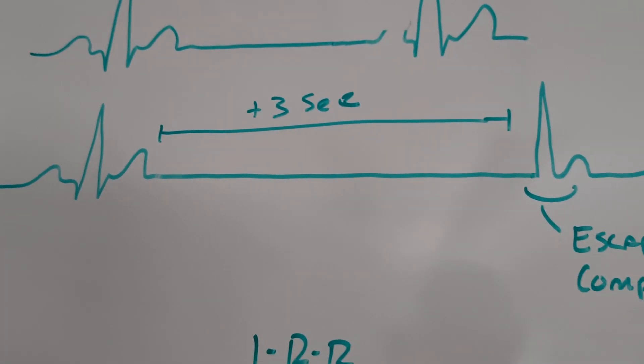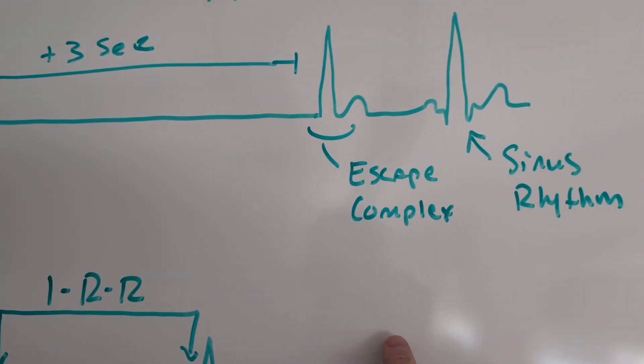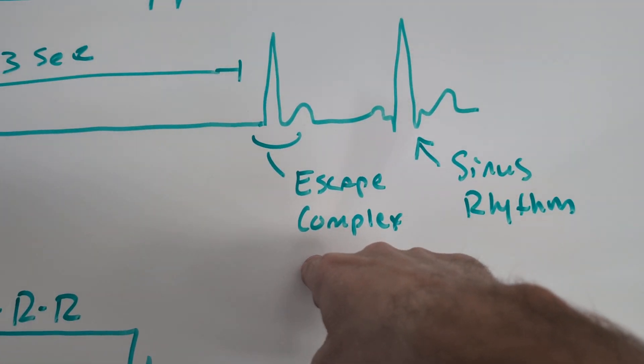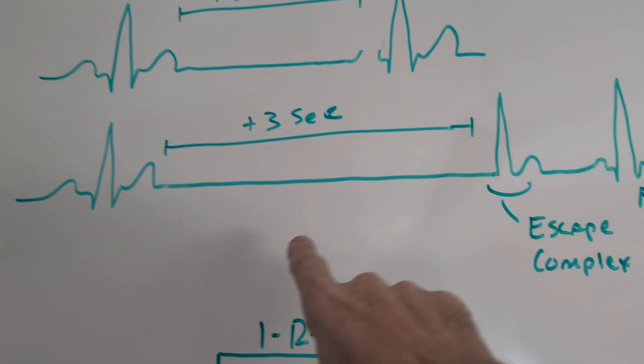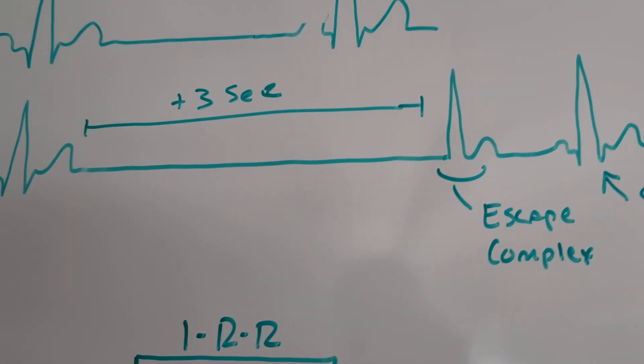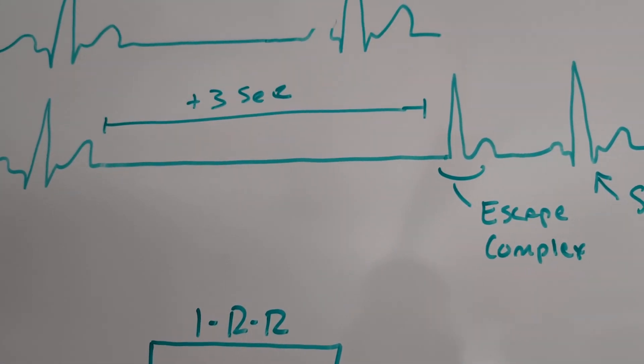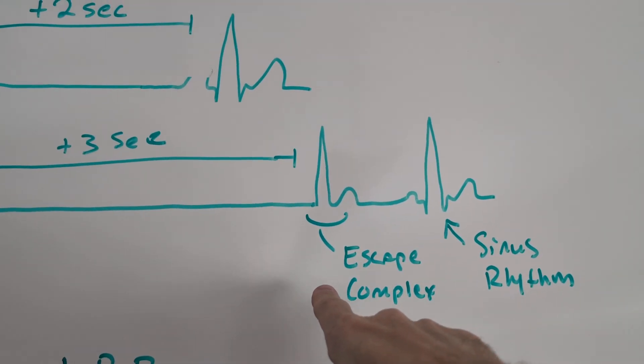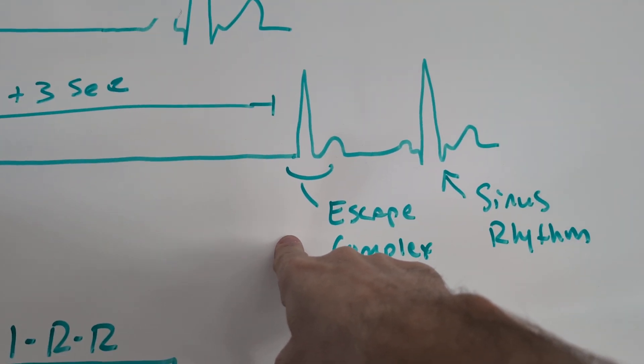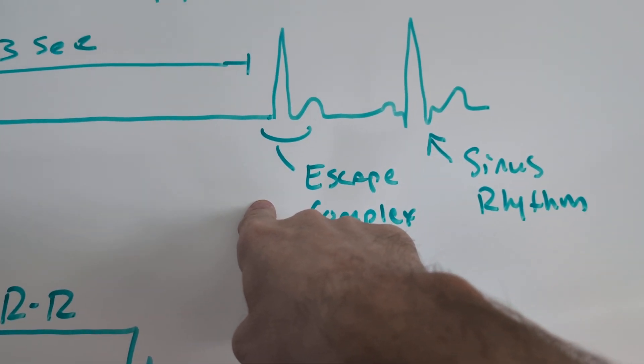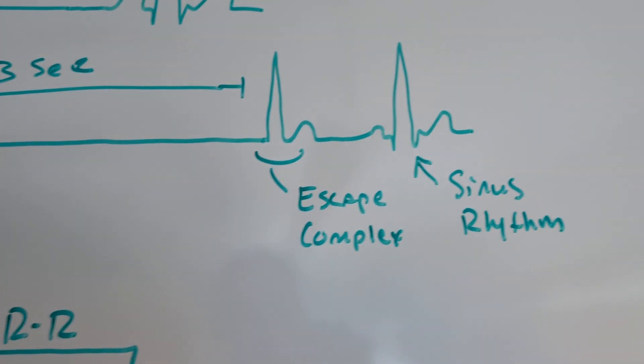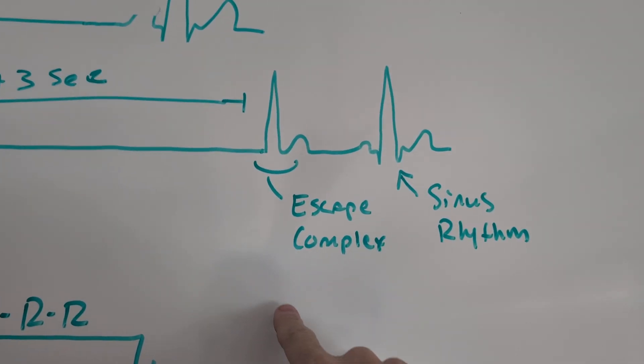In addition to that, sinus arrest is often terminated by an escape complex. So the pause, the length of time the SA node fails to fire, is so long that some other area of the heart begins to fire as the pacemaker. And so you have the very beginnings of an escape rhythm.